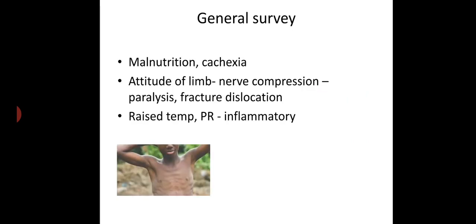Next, physical examination. First, general survey — look whether the patient is severely malnourished or cachectic, assess BMI, and attitude of the limb which may suggest nerve compression causing paralysis or fracture dislocation. Also check temperature and pulse rate; raised temperature associated with tachycardia may suggest inflammation.